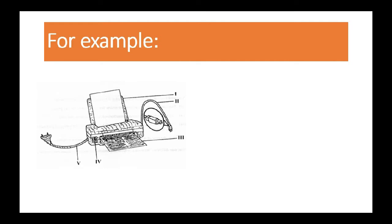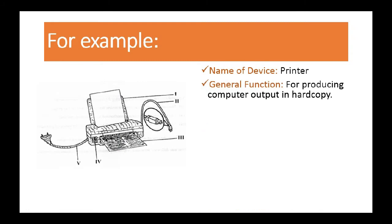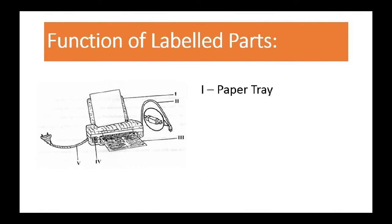Let's attempt to answer some questions about this device. The name of the device is a printer. The general function is that it is an output device for producing computer output in hard copy form. The labeled parts are: Label 1 is the paper tray, Label 2 is the printer USB cord, Label 3 is the printout, Label 4 is the power button, and Label 5 is the power cable.